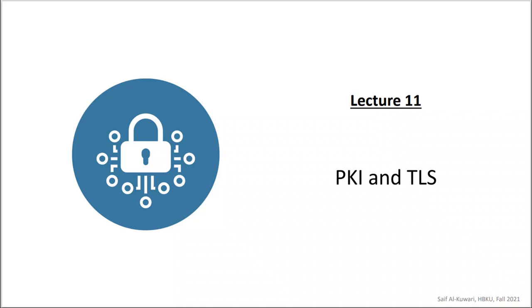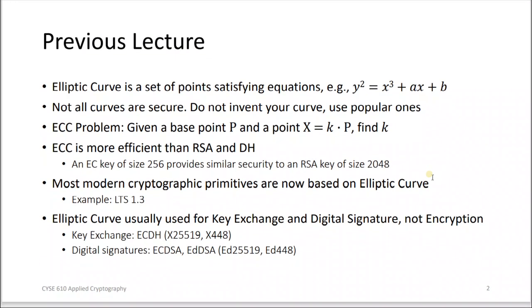Hello guys, today we want to read the slides about public key infrastructure and the transport layer protocol. In the previous lecture we studied about elliptic curves, which are curves that follow a specific equation, and not all of them are secure — we have to choose specific types that are proven to be secure.